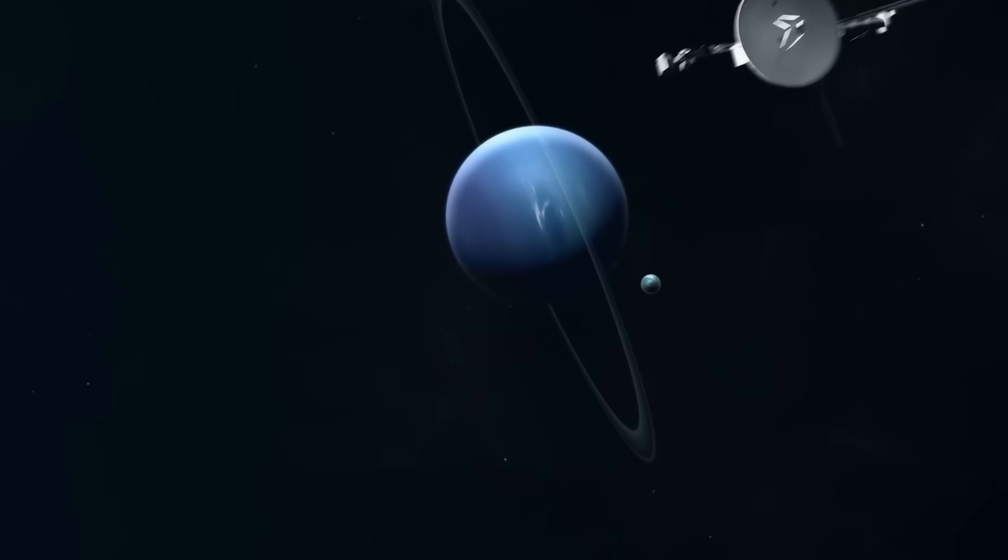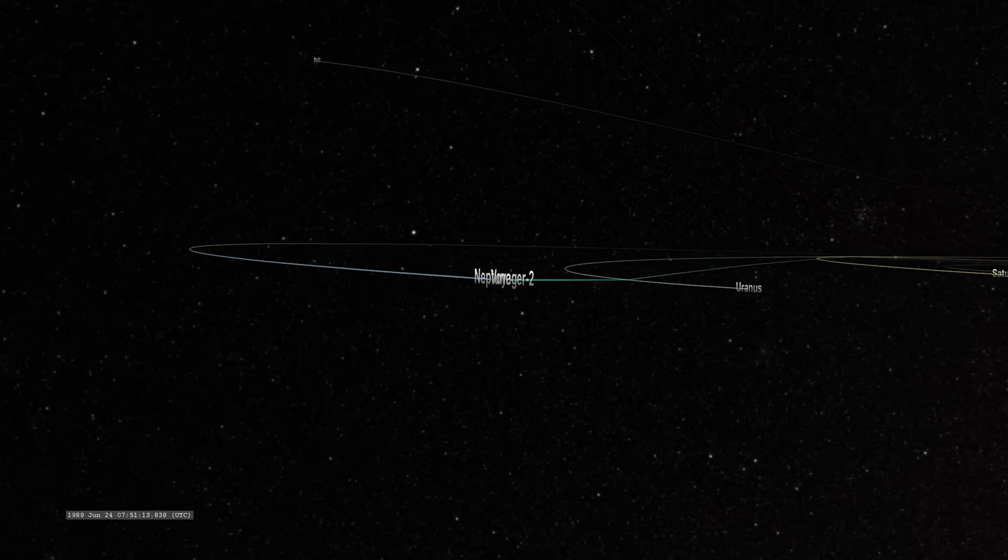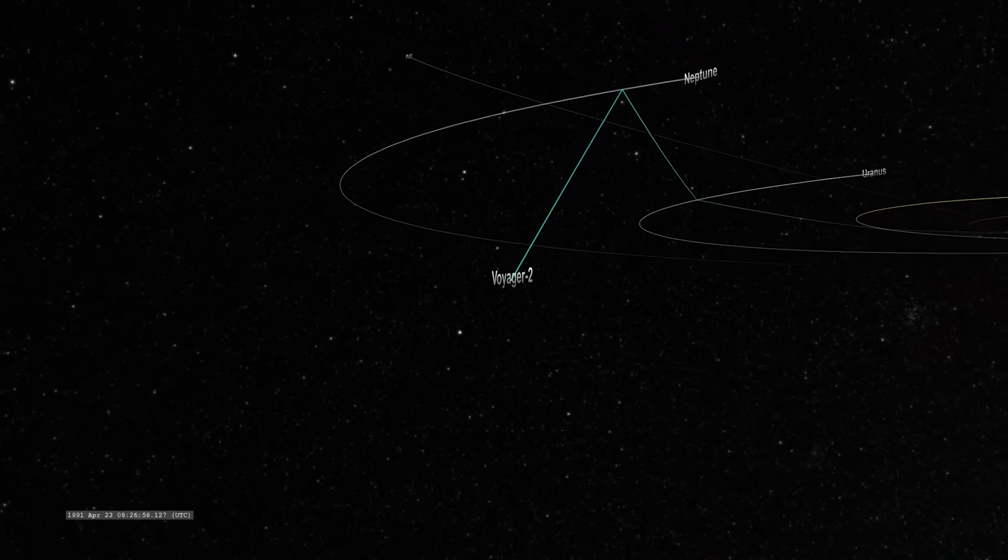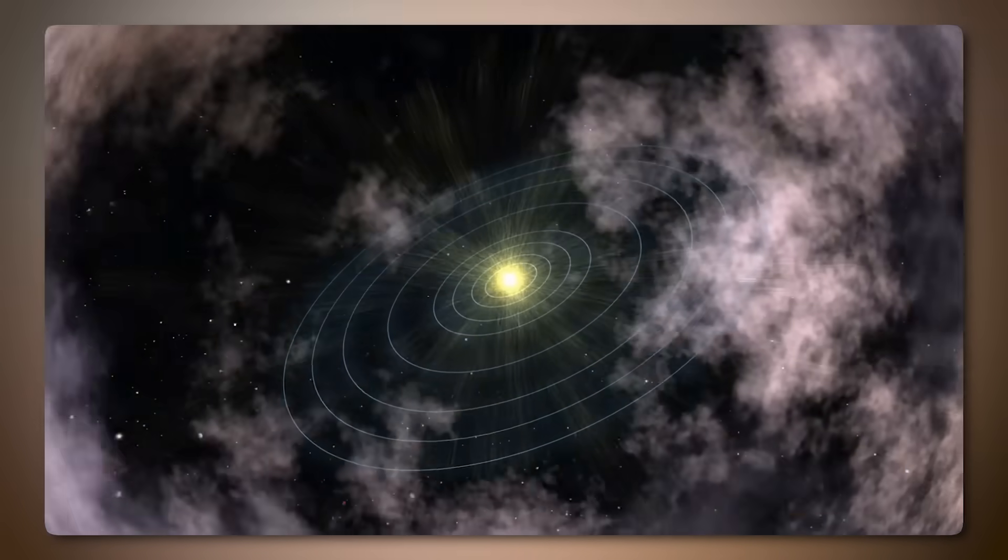Voyager 1 and Voyager 2 have uncovered several bizarre and groundbreaking phenomena throughout their journey, each providing a glimpse into the unknown. From the outer planets to interstellar space, here are some of the most extraordinary discoveries Voyager has made to date.